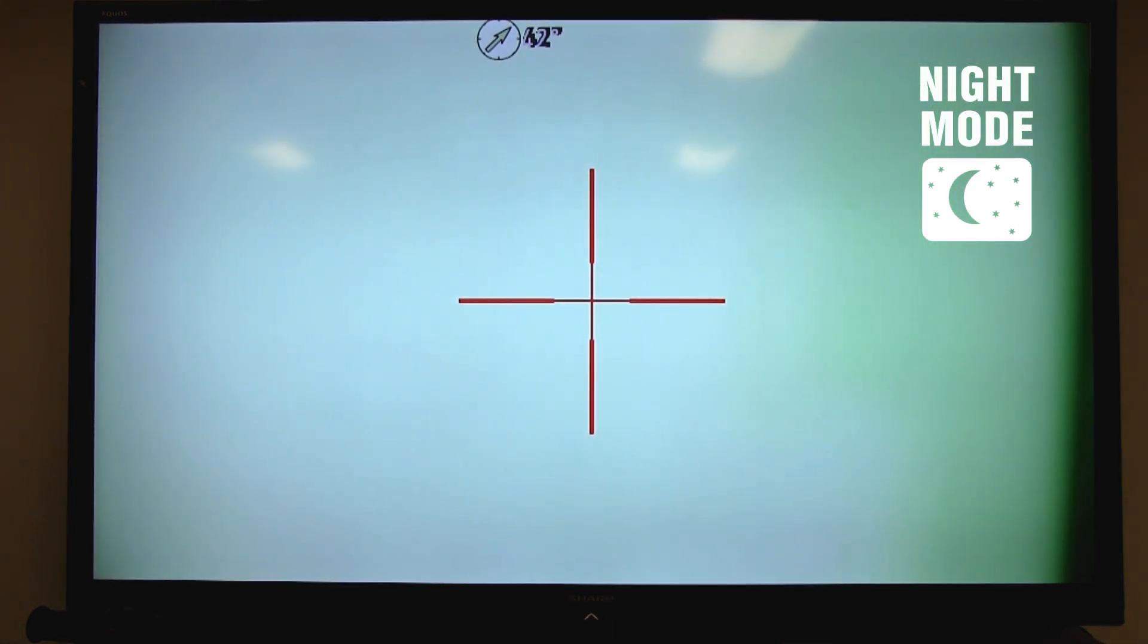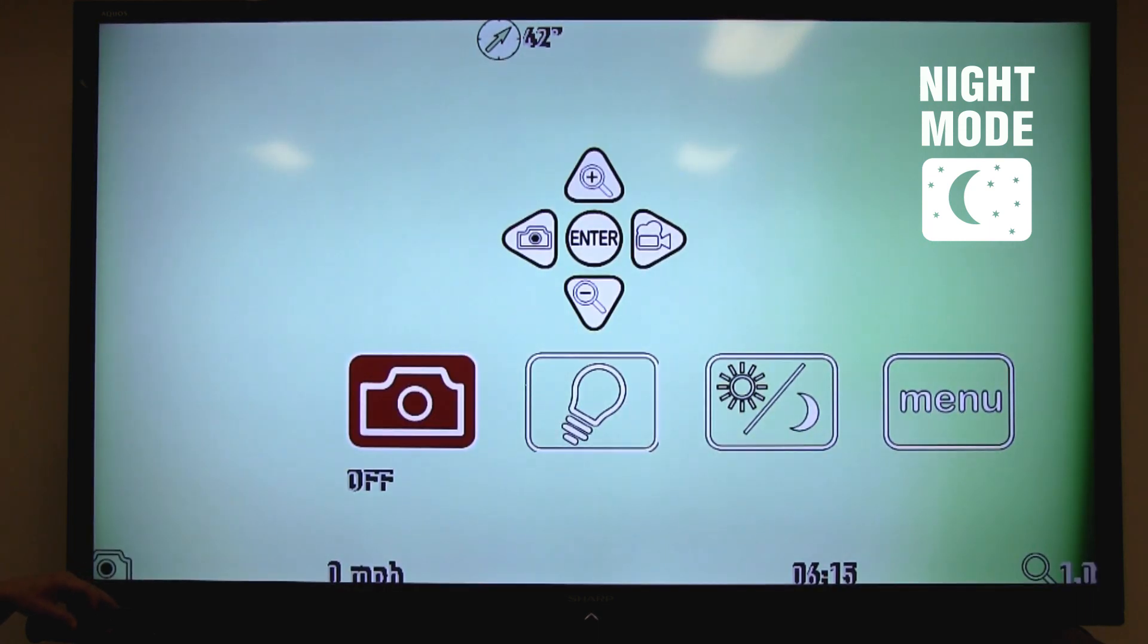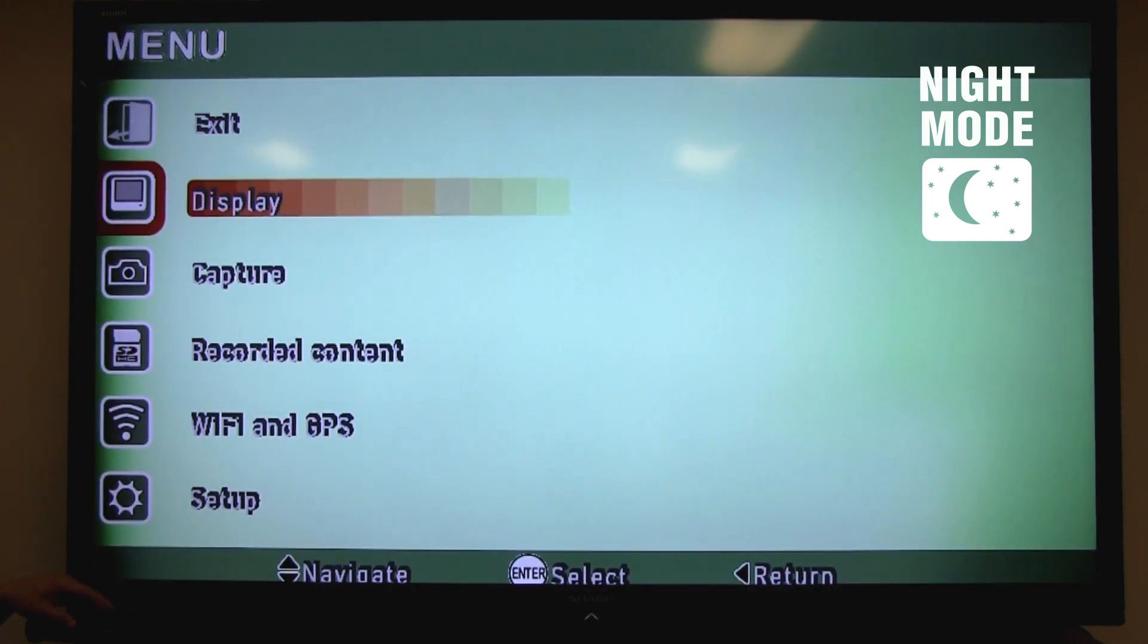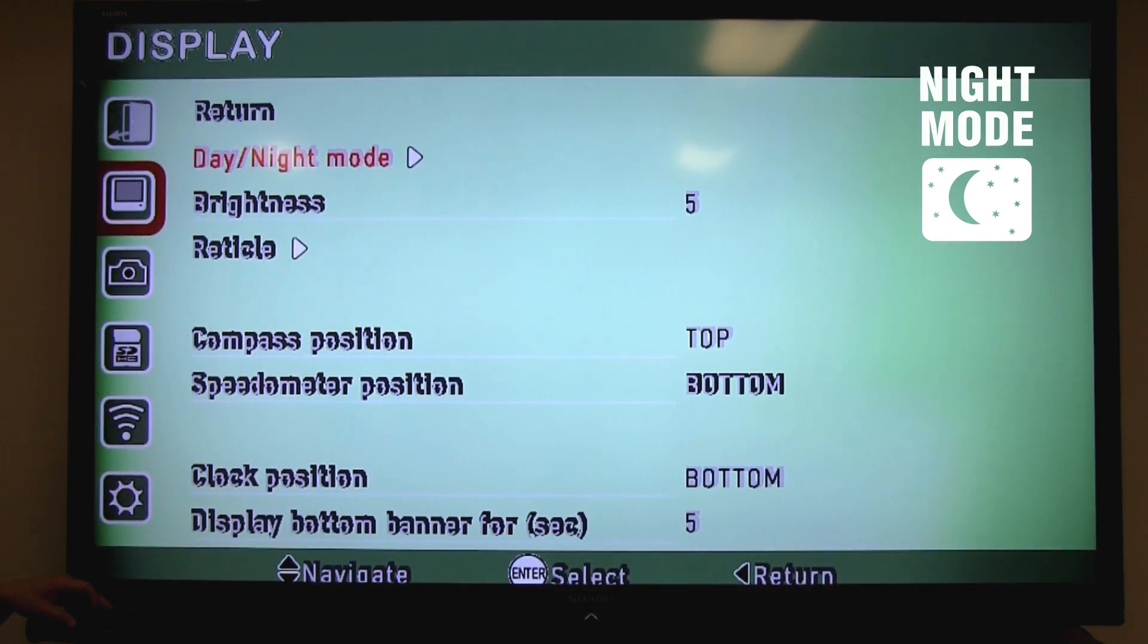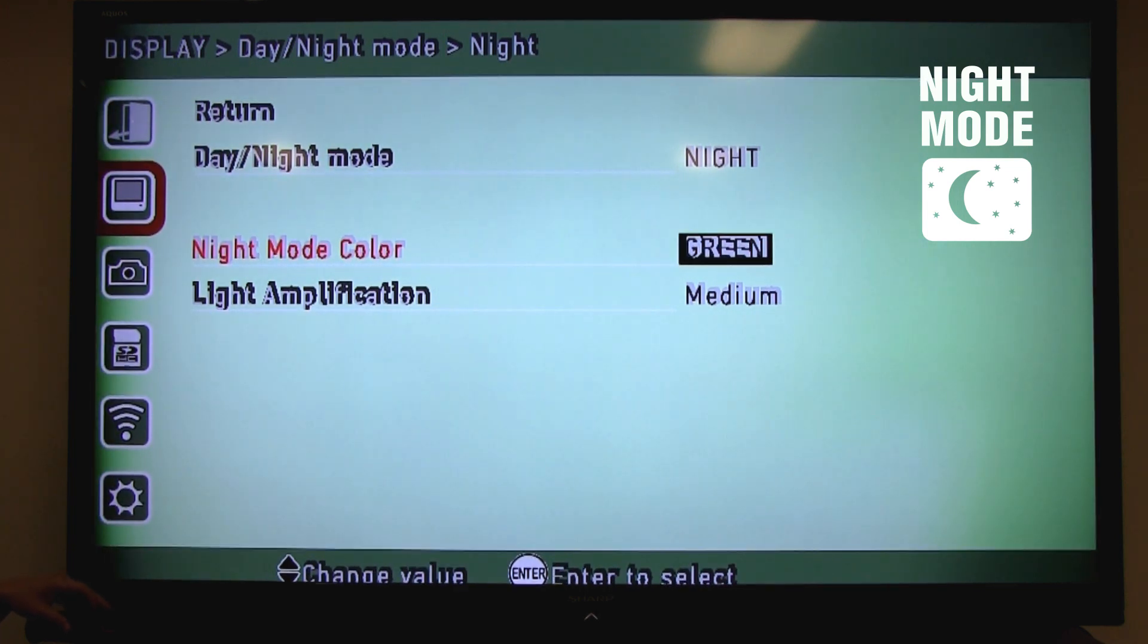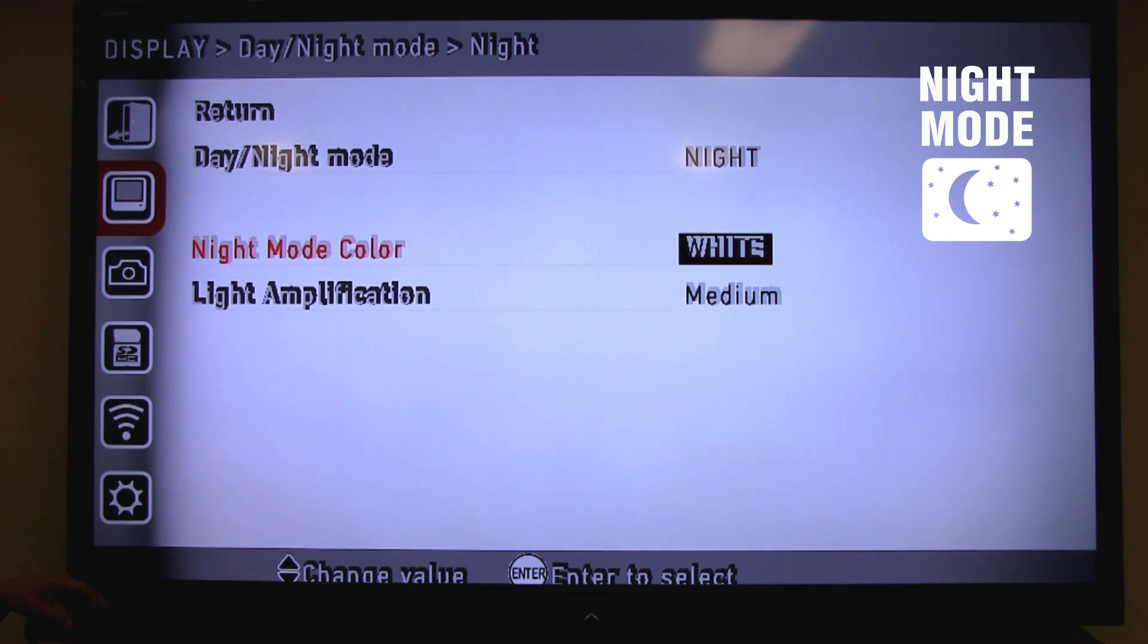To change night mode colors, press the enter button twice again to bring up your user interface. Select your menu icon, move to display, select day night mode, and select night mode color. Now you have your option of either green and black, or white and black. Simply select the night mode color by using the up or down arrow keys, and press enter.